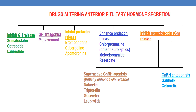Finally, coming to inhibition of gonadotropin release. Superactive GnRH agonists — GnRH is gonadotropin releasing hormone. Initially they enhance gonadotropin release and subsequently inhibit it. The drugs are nafarelin, triptorelin, goserelin, and leuprolide. Coming to GnRH antagonists, the drugs are ganirelix and cetrorelix. A helpful tip: antagonists have the suffix '-relix' whereas agonists have '-rel'.